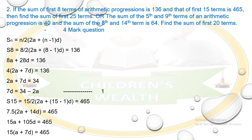Here they are asking for the sum of terms, not just a single term, so we use the formula Sₙ = n/2 × (2a + (n-1)d). They say the sum of the first 8 terms is 136, so S₈ = 8/2 × (2a + 7d) = 136, which gives us 8a + 28d = 136.